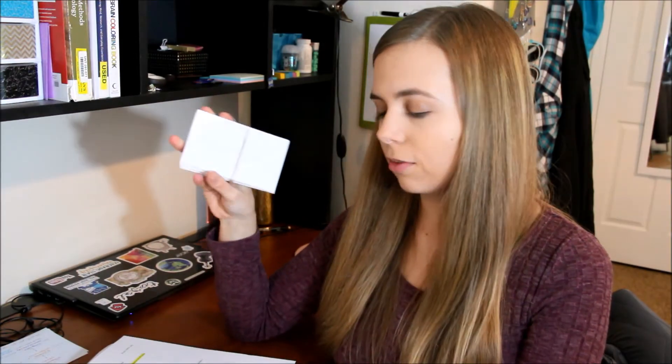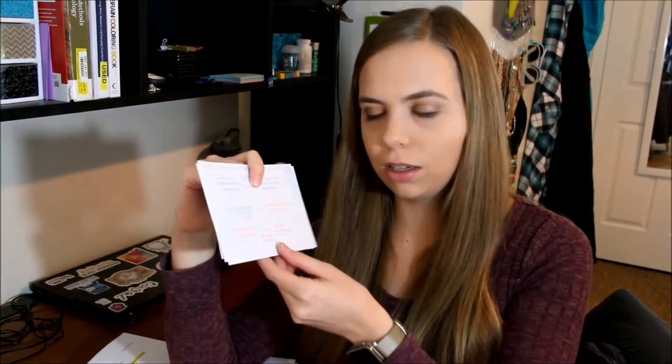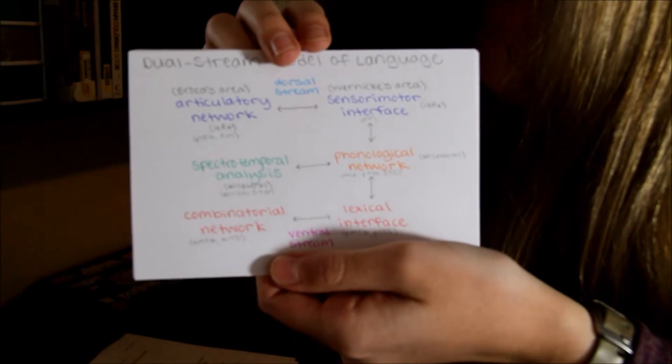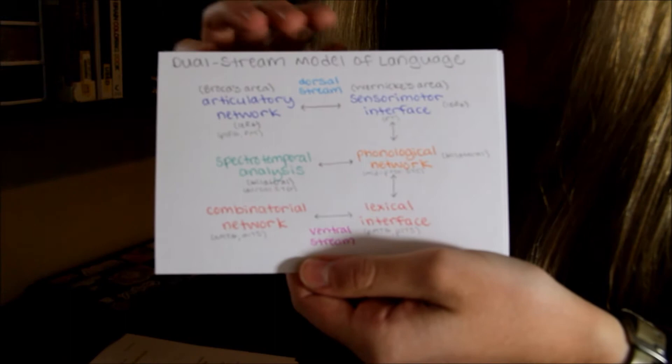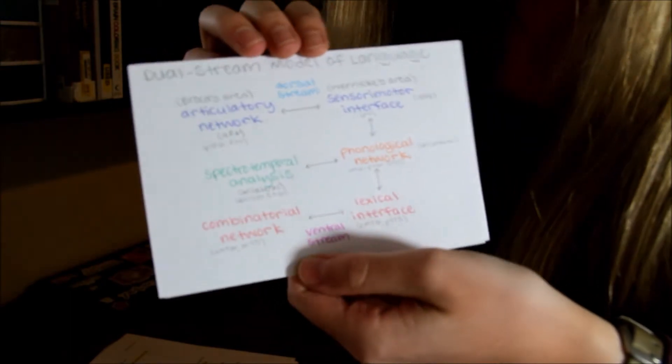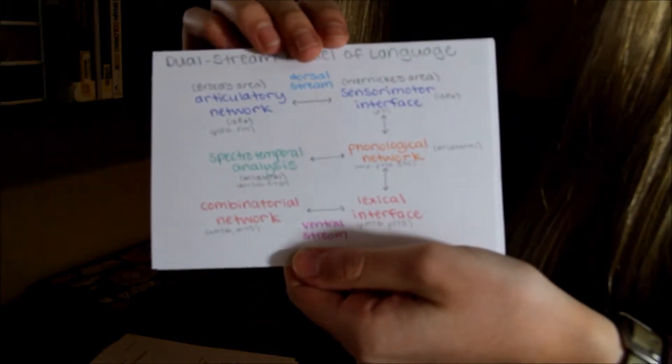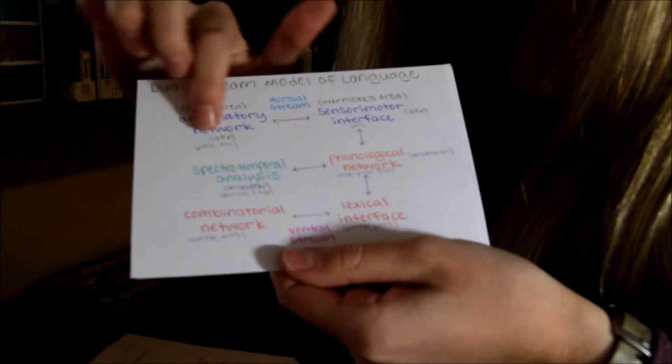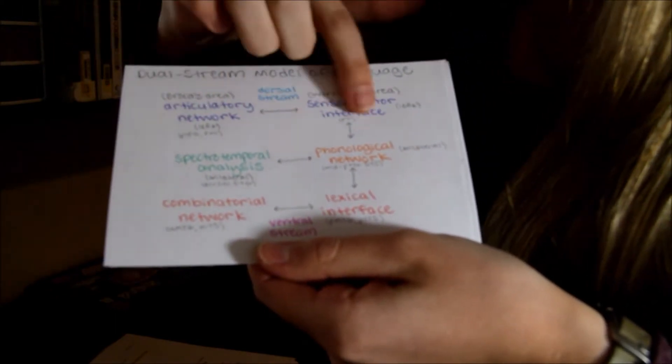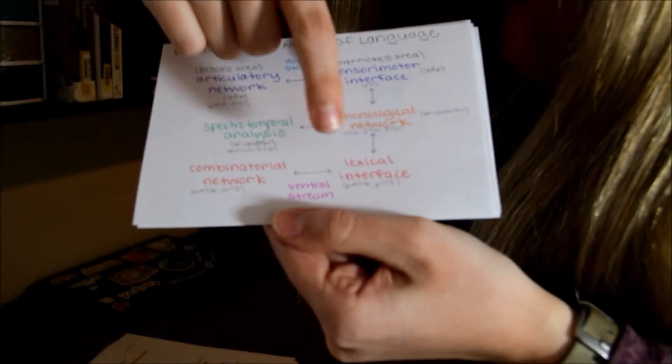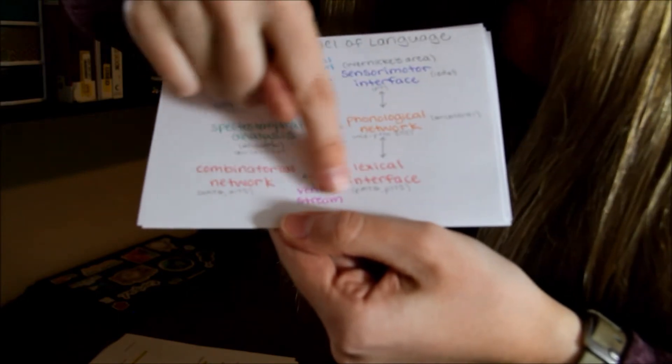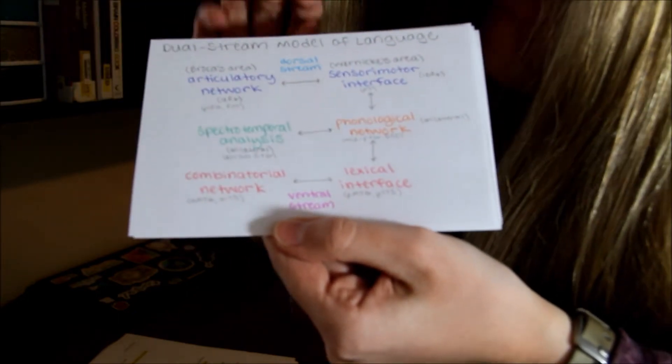But in addition to my regular stack of note cards here for terms, I also like to make a few of these like bigger note cards for really important concepts. So for example, right here, I just have this pathway that used to be a pretty confusing figure in my notes, but I simplified it by just writing it on my note card like this. And I also color coded some things that went together. So like these, all these blue things up here are part of the same pathway, so I color coded them blue. And then same with the red slash pink things down here.